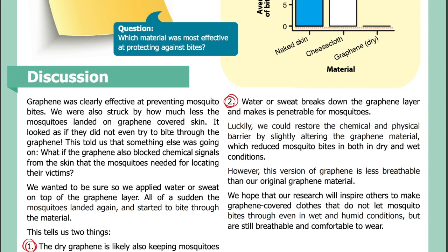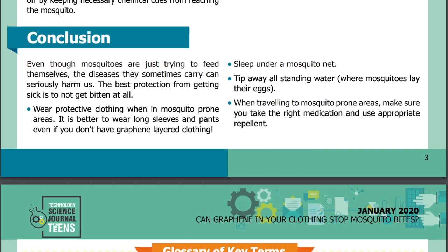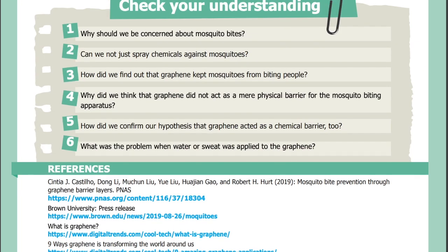However, this version of graphene is less breathable than our original graphene material. We hope that our research will inspire others to make graphene-covered clothes that do not let mosquito bites through, even in wet and humid conditions, but are still breathable and comfortable to wear. Conclusion: Even though mosquitoes are just trying to feed themselves, the diseases they sometimes carry can seriously harm us. The best protection is to not get bitten at all — wear protective clothing when in mosquito-prone areas, long sleeves and pants even without graphene-layered clothing, sleep under a mosquito net, tip away all standing water where mosquitoes lay their eggs, and when traveling to mosquito-prone areas, take the right medication and use appropriate repellent. The paper also includes a glossary, comprehension questions, and references for where they got their information.